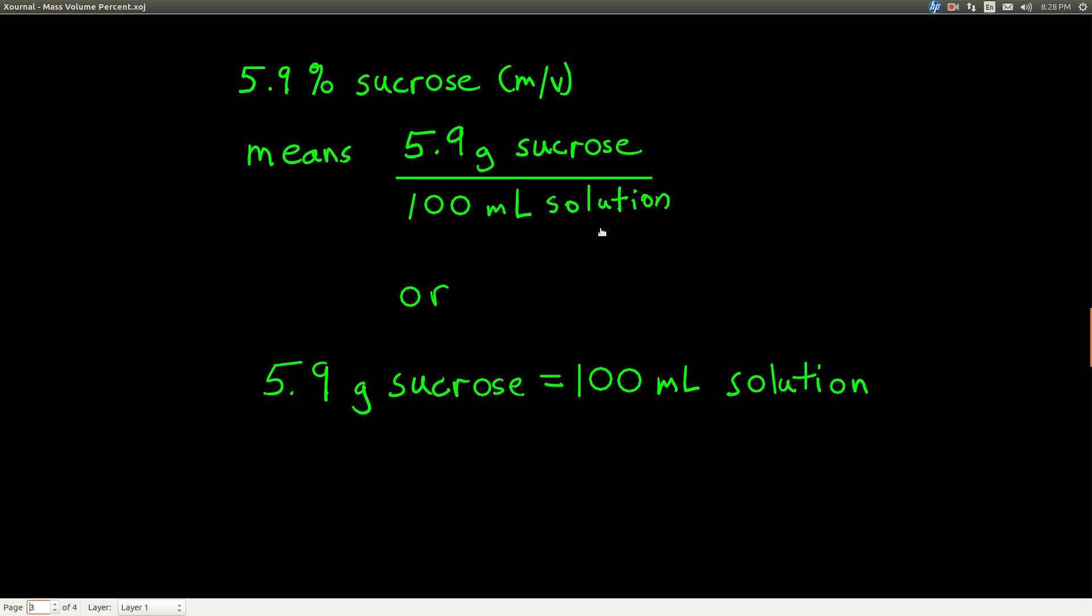So now thinking ahead to dimensional analysis, we can write this as a conversion factor. We can say that for this particular solution, 5.9 grams of sucrose is equal to 100 milliliters of solution. That's a conversion factor that lets us convert between milliliters of solution and grams of the solute, which is sucrose.